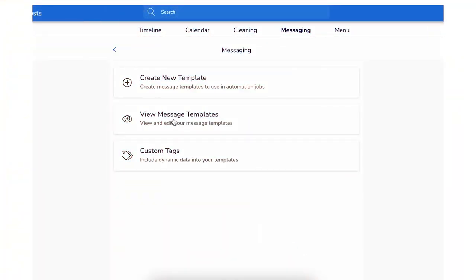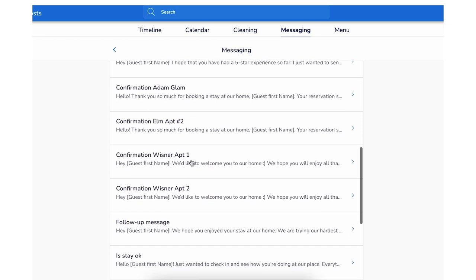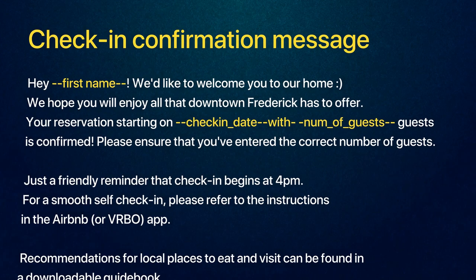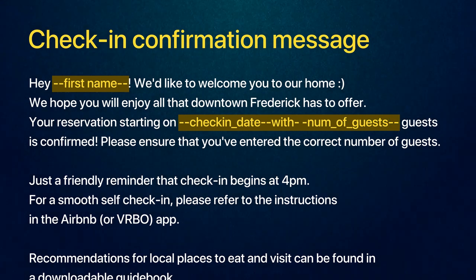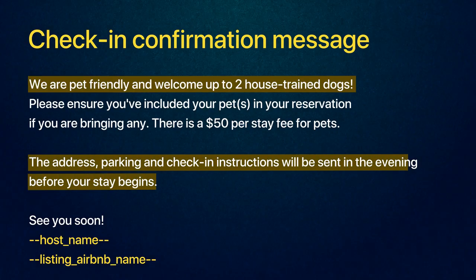Now let's get into the exact messages that I use for my Airbnb business. The first message that I send is the booking confirmation — that is what I title it in my Guesty for Hosts platform. It includes the name of the guests, the number of guests in the reservation, and whether or not they have pets. I make an inquiry saying we welcome pets, so if you are bringing them, please indicate that in your reservation — and we do charge an additional fee for pets. That has been really great because it has caught maybe about half of the guests who were bringing pets and just didn't know to indicate it. I also let them know that their check-in instructions will be coming the evening before.